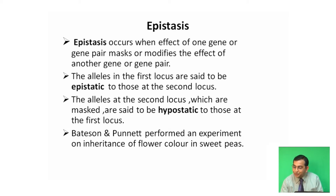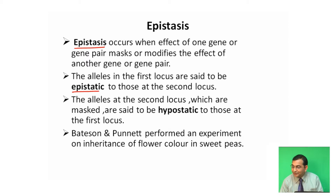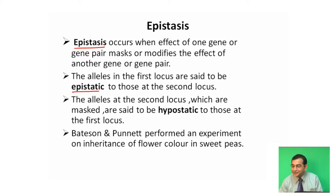The alleles at the first locus are said to be epistatic to those at the second locus. On the other hand, the alleles at the second locus are said to be hypostatic to those at the first locus.